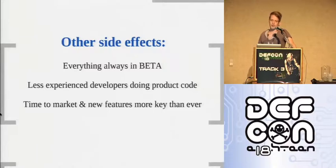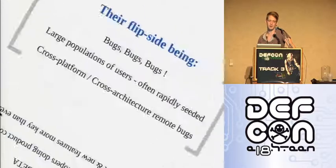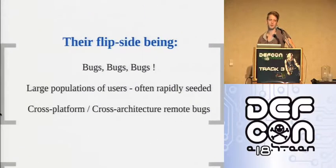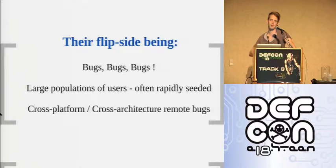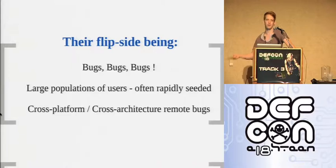Other side effects of the new development model: obviously everything is always in beta, less experienced developers are writing code that actually goes into products, and time to market and new features are key. So there will be a lot of new code out there that hasn't been tested as thoroughly as you'd like. And obviously the flip side is that there are going to be tons of bugs - and that's what we like. There are often new large populations of users for whatever the hot app of the week is, and they can be rapidly seeded. A huge population of users running some very vulnerable code will burst up. And a lot of these bugs, because they're in higher level languages, are actually cross-platform and cross-architecture.